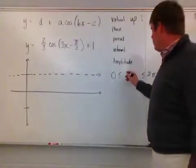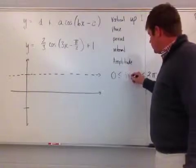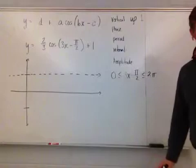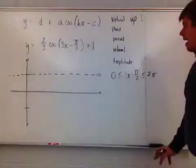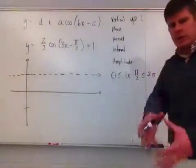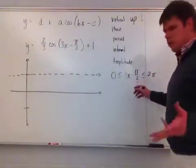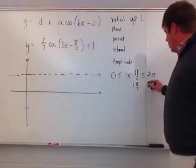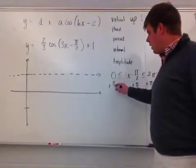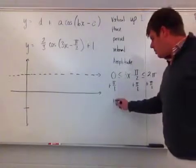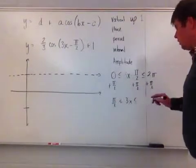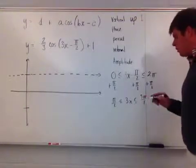The way you do that is by setting up the compound inequality of taking whatever you're taking the cosine of and plugging it into the original statement of the domain of the cosine function. So this now becomes zero is less than or equal to three x minus pi over two, which is less than or equal to two pi. So plus pi over two on both sides. This is just the idea of solving a compound inequality. And I've got pi over two is less than or equal to three x, which is less than or equal to five pi over two.